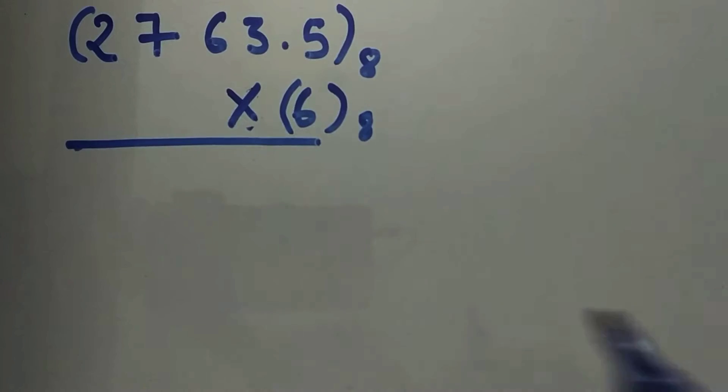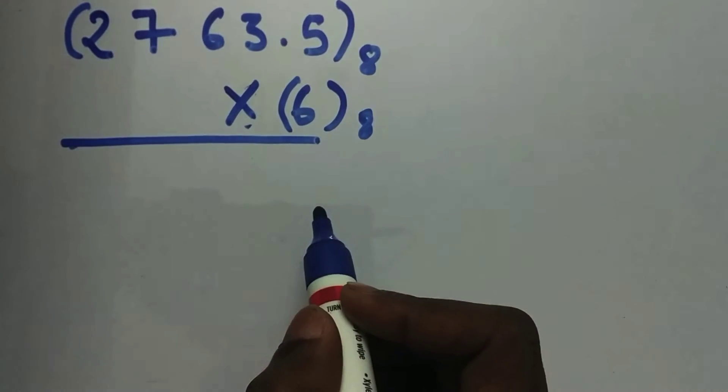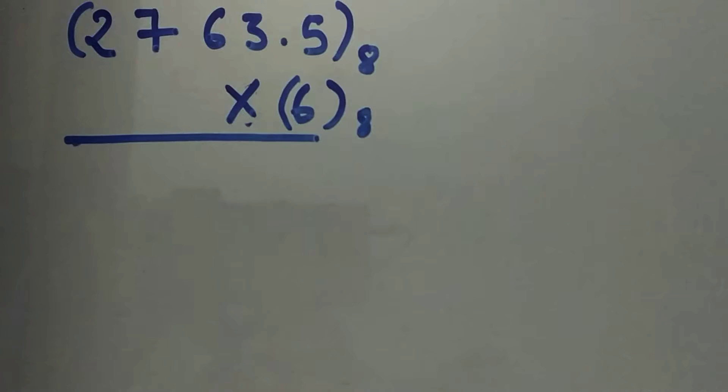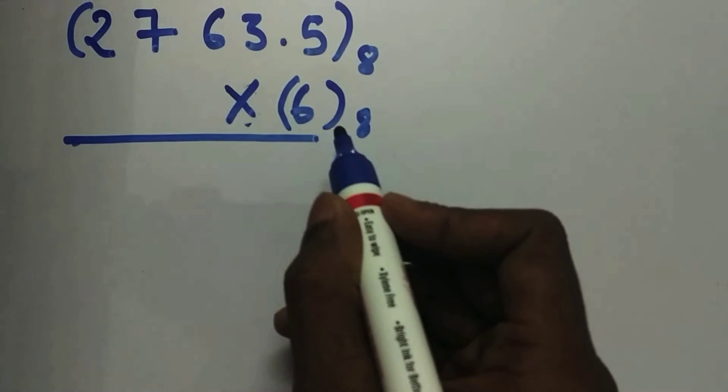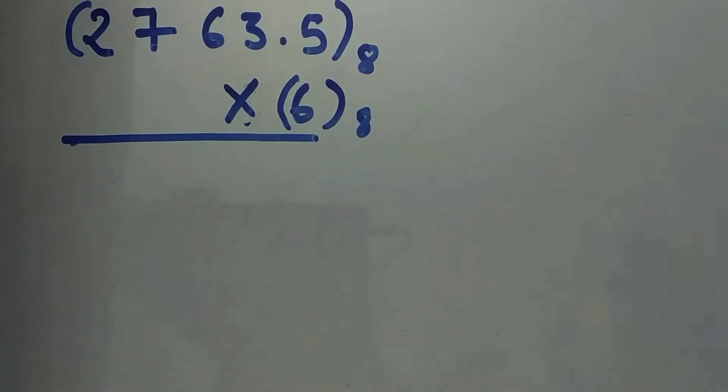I'm gonna take this example: 2763.5 × 6 in octal form. We are gonna multiply 6 with 5 in normal decimal form, then whatever result or product we get, that's gonna be converted into octal.